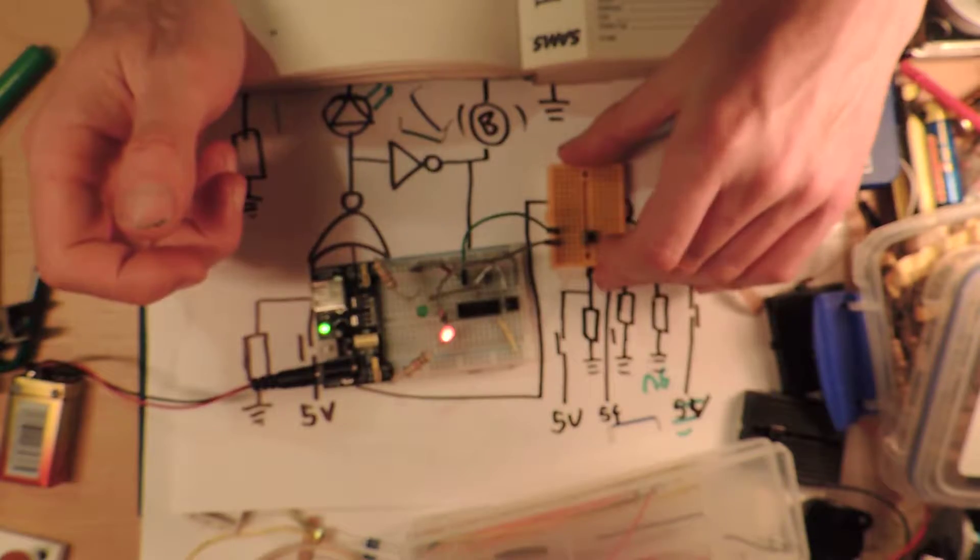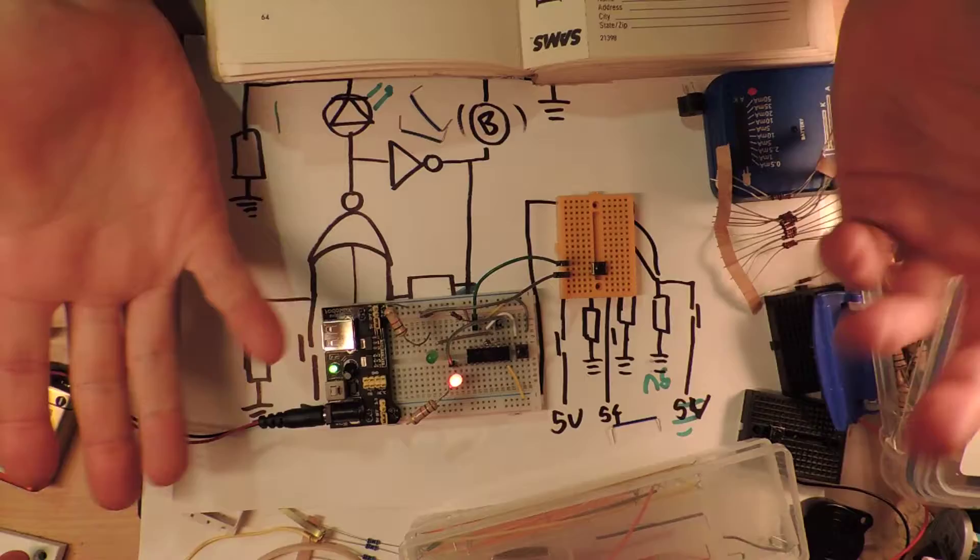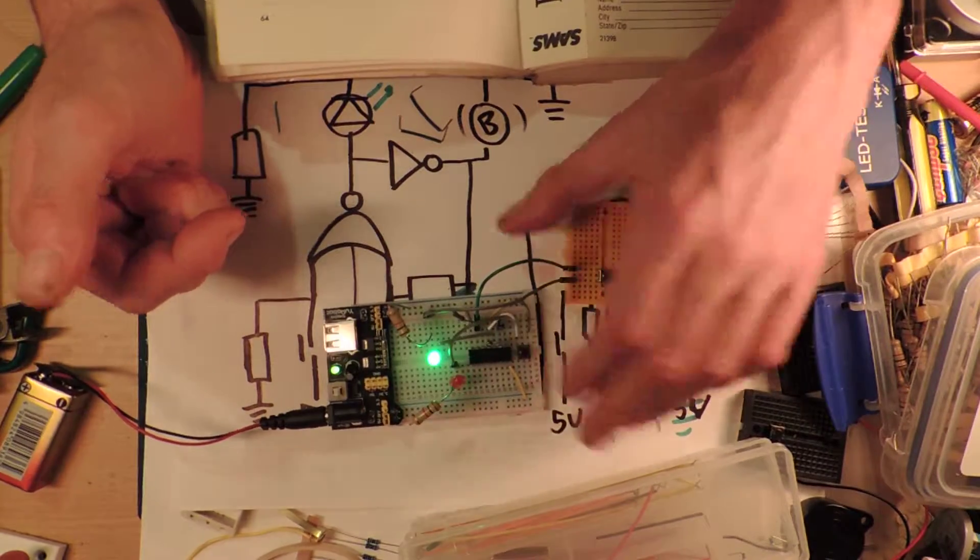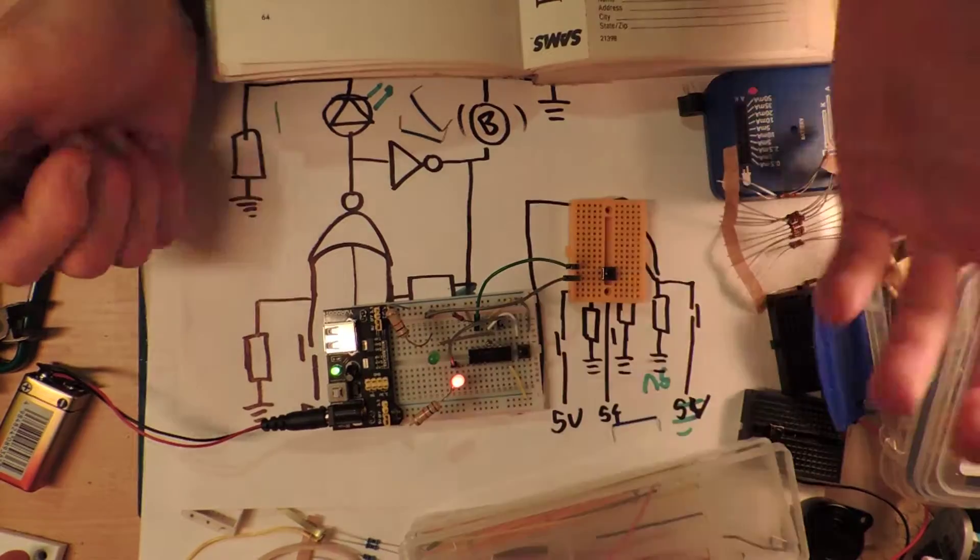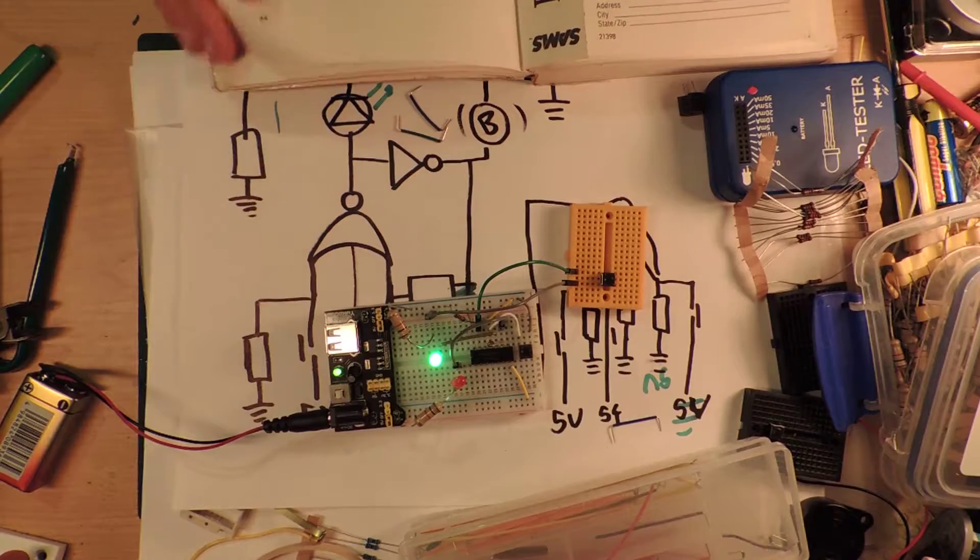All right. So alarm goes off. Yo! Look at that! Okay. So my alarm is going off because I tripped the thing. And then I'm going to reset my alarm. And voila. Alarm goes off. Reset my alarm. Alarm goes off. Reset my alarm. Alarm goes off. Reset my alarm. Alarm goes off.